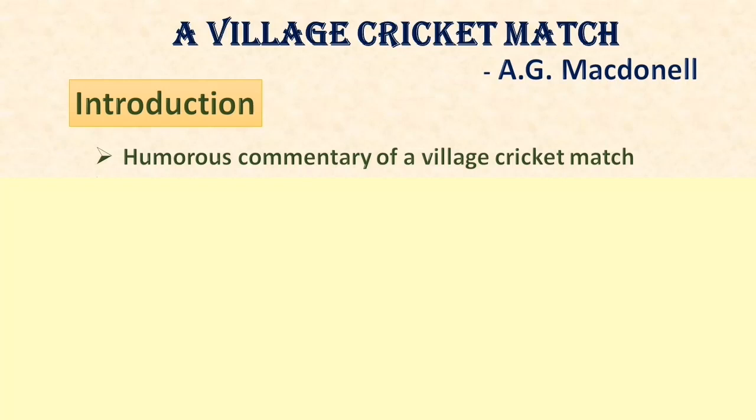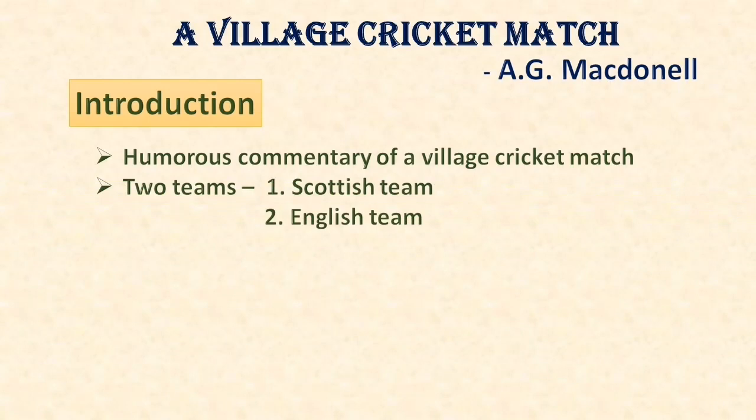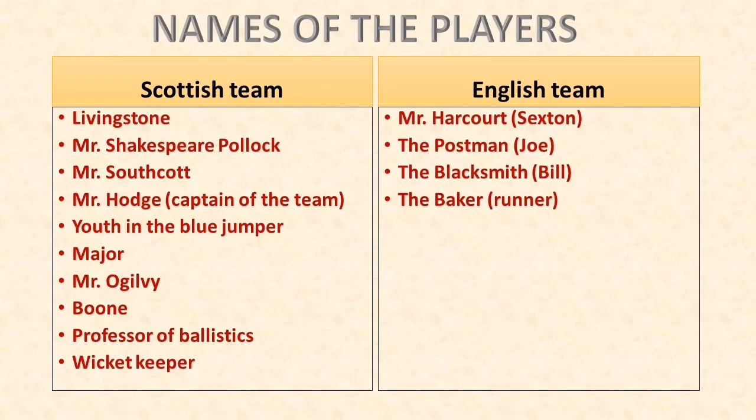This is a humorous commentary of a village cricket match. The two teams playing cricket are the Scottish team and the English team. Some important players from the Scottish team are Livingstone, Mr. Shakespeare Pollock, Mr. Southcott, Mr. Hodge (he is the captain), a youth in the blue jumper, a major, Mr. Ogilvy, Boone the professor of ballistics, and the wicket keeper. From the English team: Mr. Harcourt, the postman, the blacksmith, and the baker.